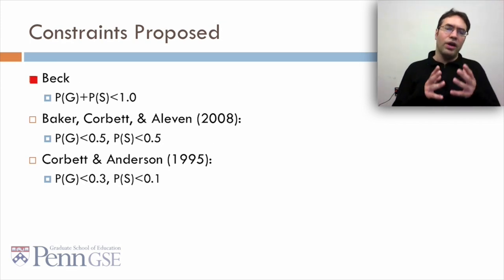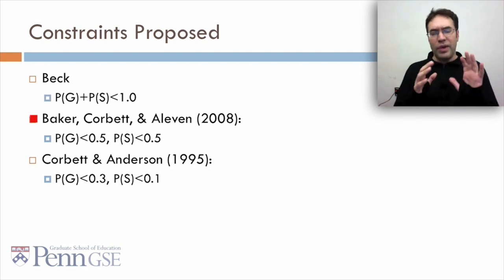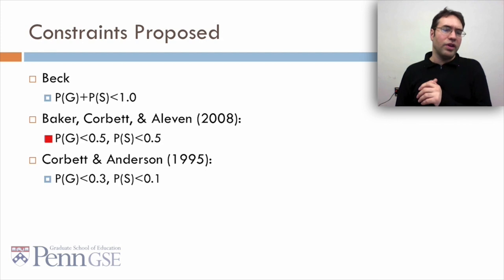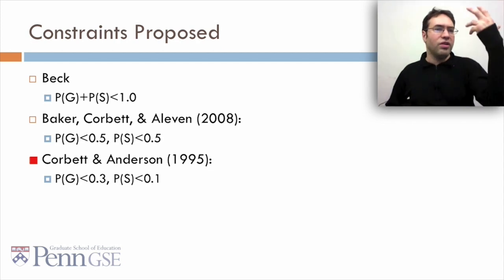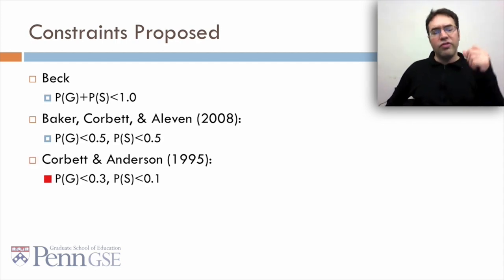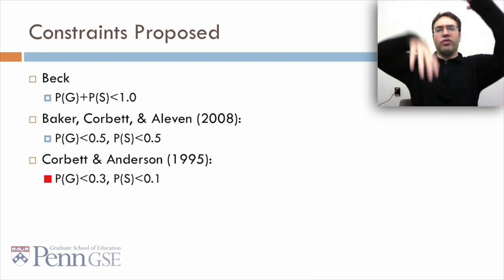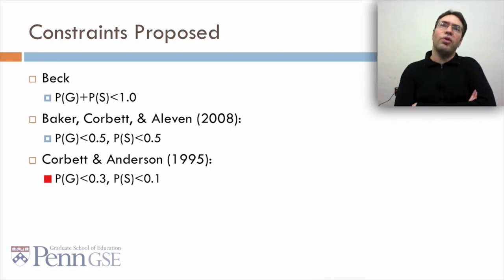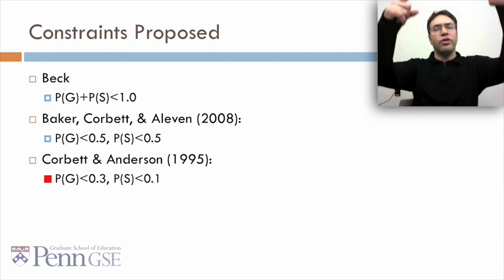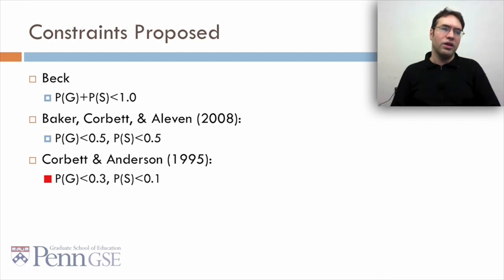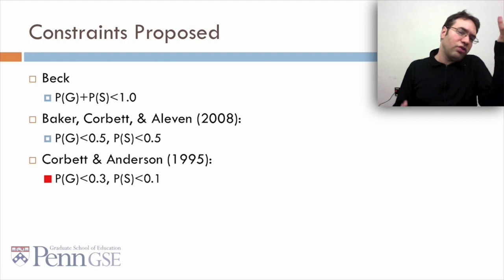Some constraints have been proposed by different people. Joe Beck has proposed that the probability of guess plus the probability of slip has to be less than one. Baker, Corbin, and Olaven have proposed that guess and slip each have to be less than 0.5. And Corbin and Anderson originally proposed, and this was not entirely just for model degeneracy but also based on kind of theorizing about what was probable, that P(G) has to be less than 0.3 and P(S) has to be less than 0.1. Baker would say that when either guess or slip get above 0.5, you're in a situation where the behavior doesn't mean what it looks like. Beck would say that for some cases where the modeling can get difficult, specifically like with automated speech response where you're making inference, that there might be enough error that you might get guess or slip up above 0.5, but as long as they're under 1.0 as a sum, it's still okay. Which one you trust is kind of a matter of opinion right now. I think that there's good arguments on both sides.